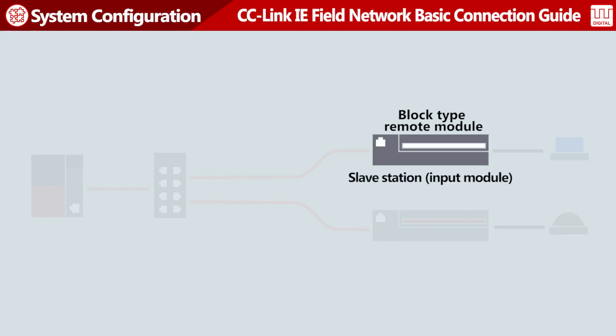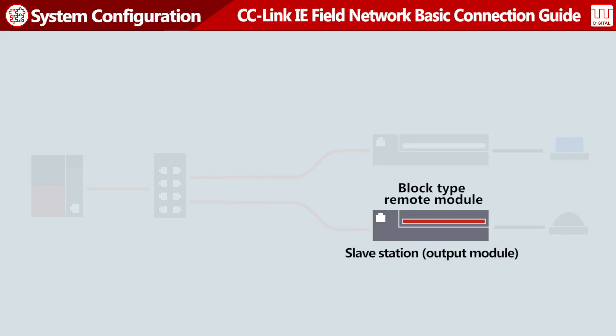This is the slave station input module. The module inputs signals to the master station. This is the slave station output module. The module outputs signals in accordance with data received from the master station.